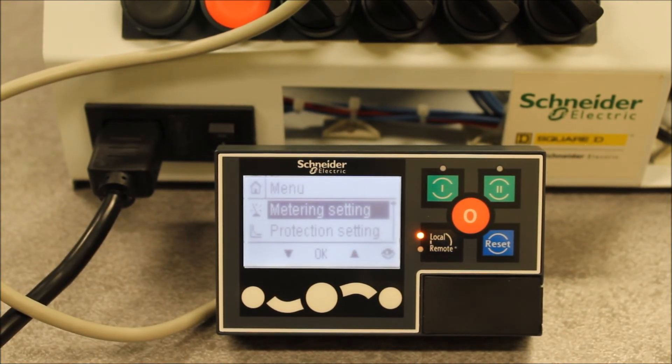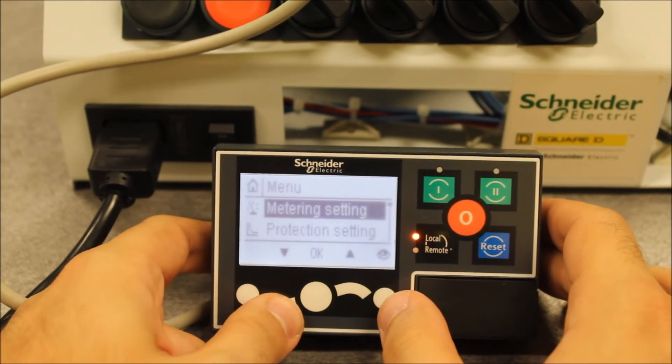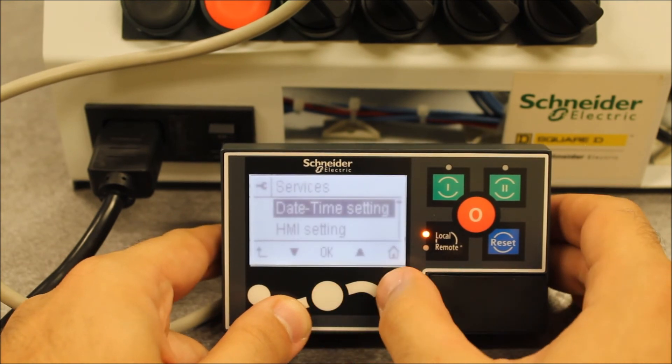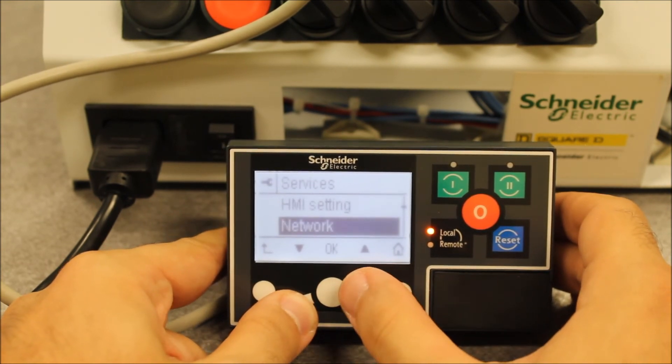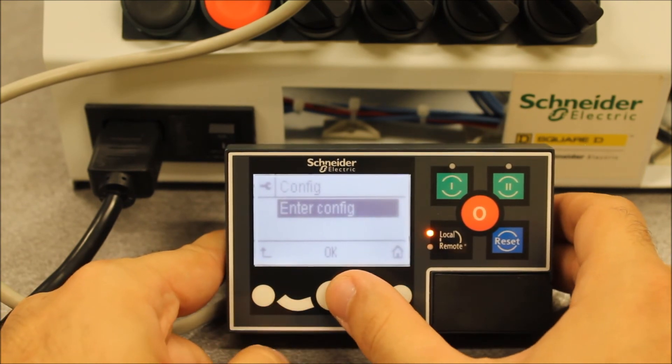And going back, going the opposite way here, let's say you want to make some parameter changes. For that, you have to go down to the services tab again, enter, and then go down to config. It will ask you enter config, you say okay.